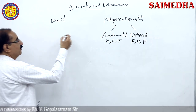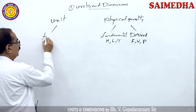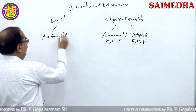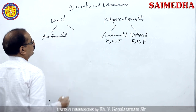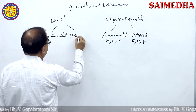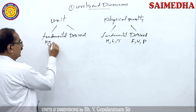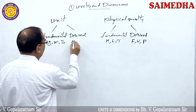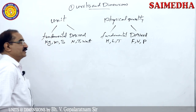The units used to measure fundamental physical quantities are called fundamental units. The units used to measure derived physical quantities are called derived units. Fundamental units include kilogram, meter, and second. Derived units include Newton, Joule, and Watt.